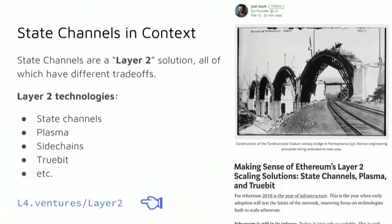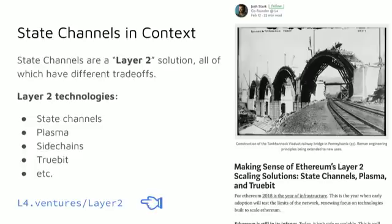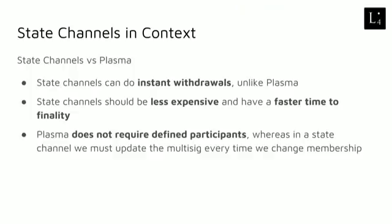Now let's move on to talking about state channels in context. We get this question a lot from people about how state channels fit in with other things they have heard about. In general, state channels are a layer 2 solution, which is a category of things that includes plasma, sidechains, Truebit, and other things. You can visit this link to read an in-depth article about these layer 2 solutions. All of the layer 2 solutions have different trade-offs between them. One common thing people want us to compare against is specifically plasma, so let's compare. State channels can do instant withdrawals if both parties agree that the latest state has been submitted, which you cannot do in plasma. State channels should be less expensive than plasma and have faster time to finality.